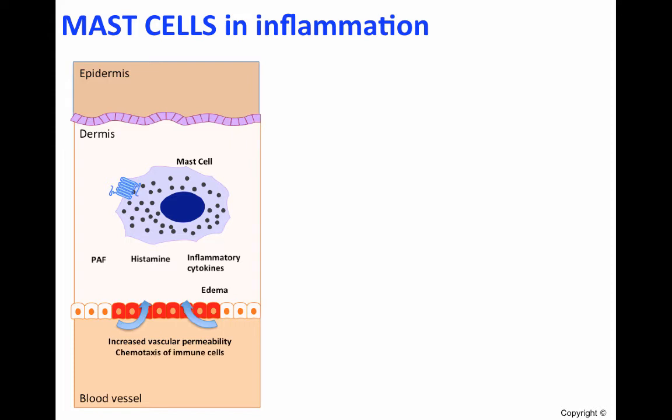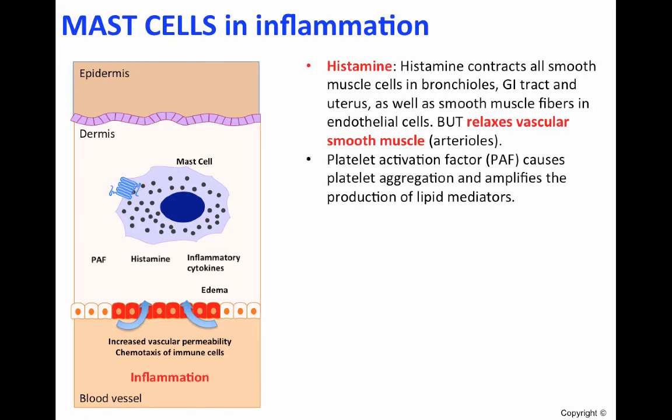The activation of the endothelial cells also aids in the chemotaxis of immune cells to the site of infection. The result of all of these actions will be inflammation. Mast cells are found in most tissues, including skin, and they release, as said before, histamine.